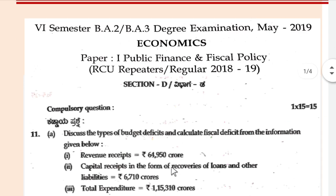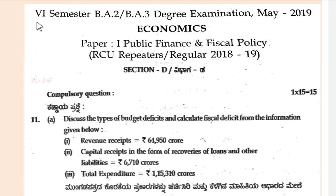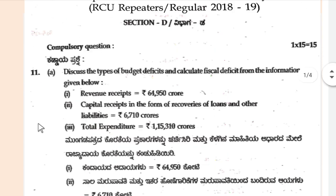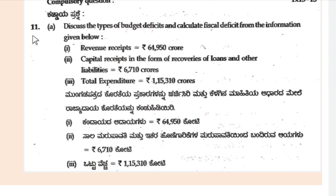Friends, here I have a question paper: 6th Semester BA Degree Examination May 2019, Paper 1, Public Finance and Fiscal Policy. Section D, Compulsory Question for 15 marks. Question number 11: Discuss the types of budget deficits and calculate fiscal deficit from the information given below.